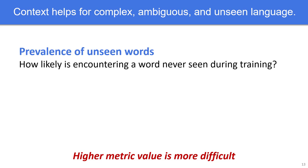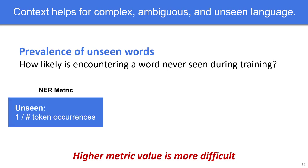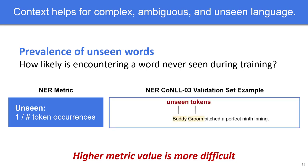For the unseen metric, we consider the inverse of the number of times a word appeared in the training set, letting one over zero equal infinity. For example, the tokens buddy and groom never occur in the training data, so context is useful to infer the token's meaning at test time. Across all three of these metrics, we hypothesize that contextual embeddings should help more on examples with high metric values corresponding to more difficult language.